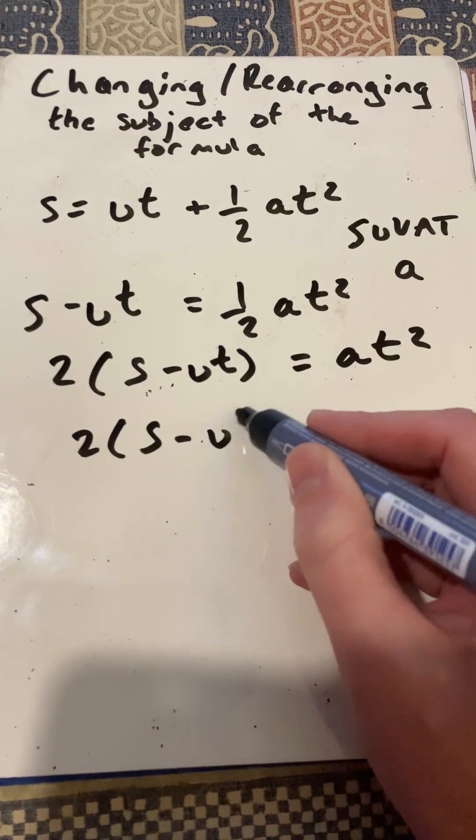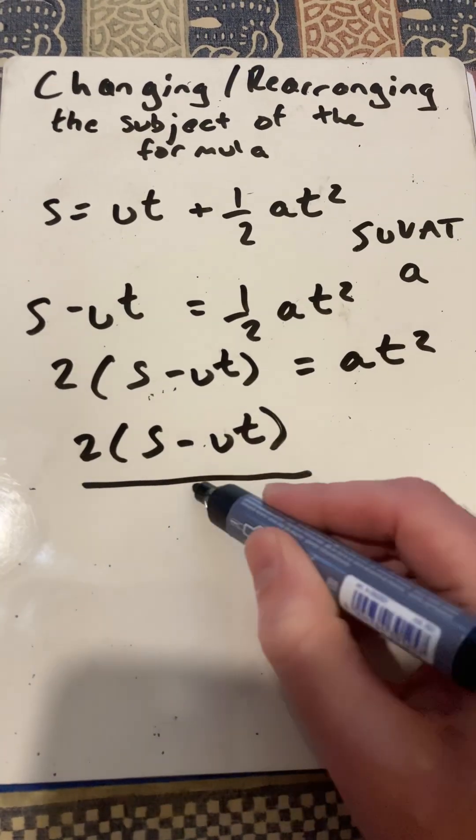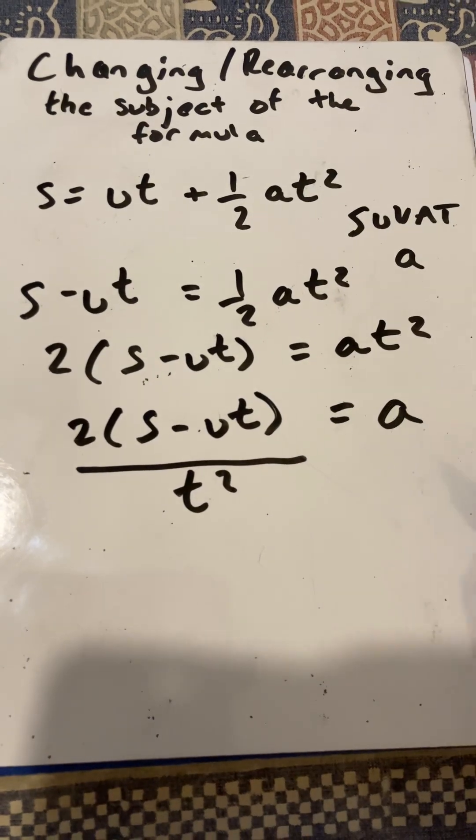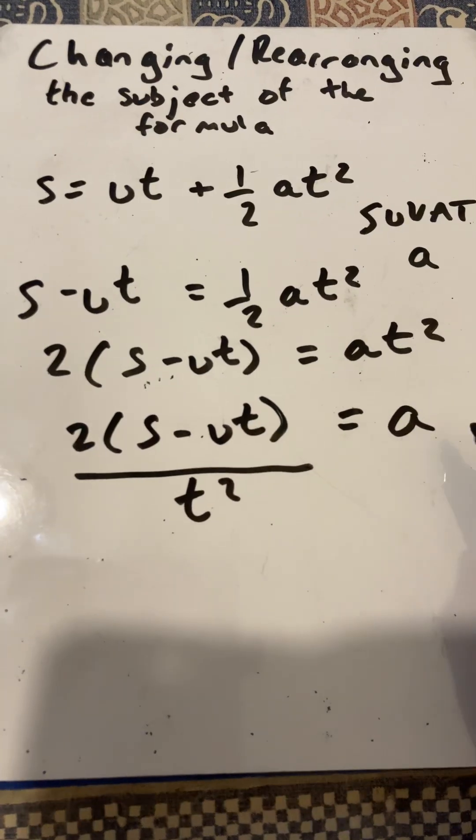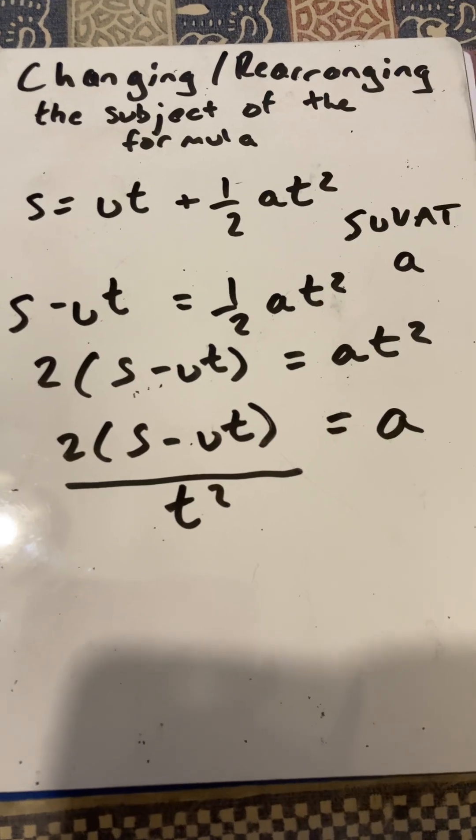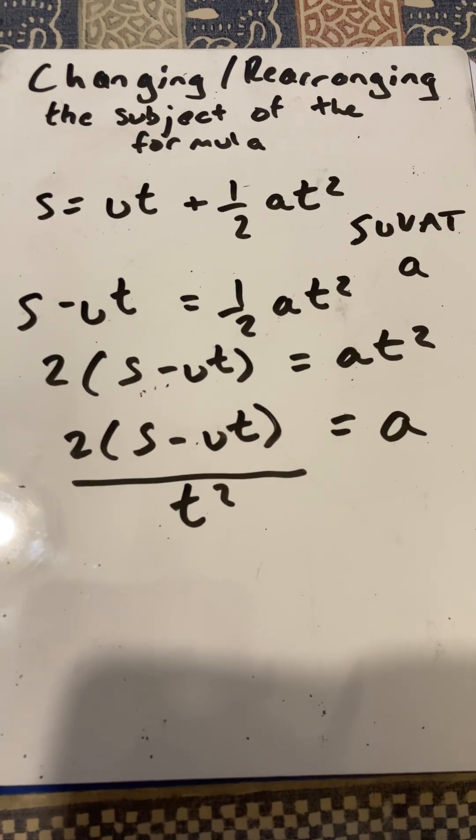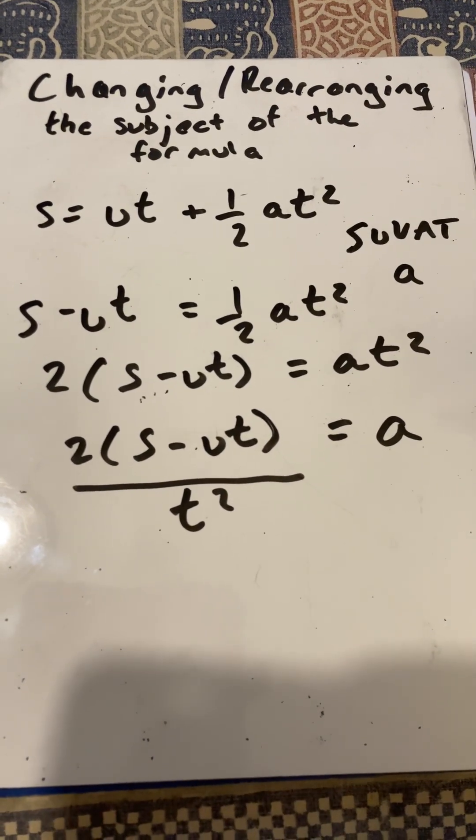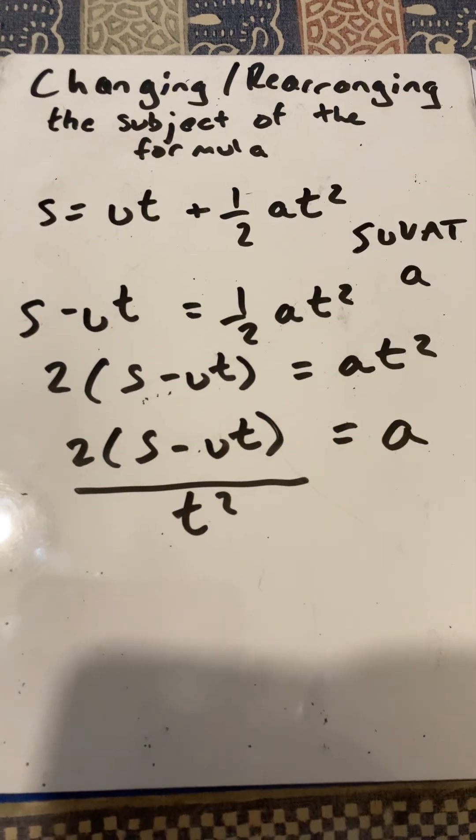So 2S minus UT all over T squared equals A. And then I can work out what my acceleration is using that formula. So there you go. That's an example of changing or rearranging the subject of the formula using the same methods that you would use when you're solving an equation.